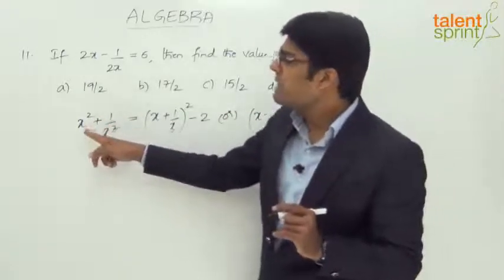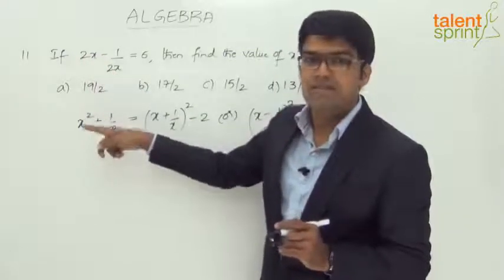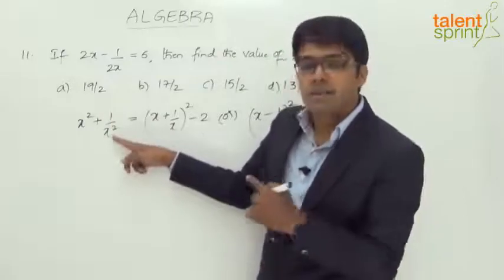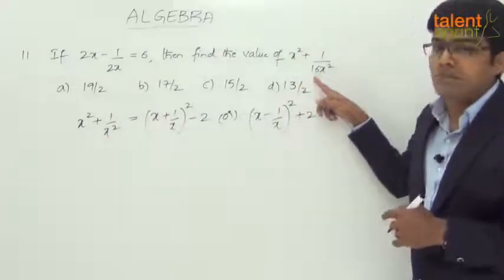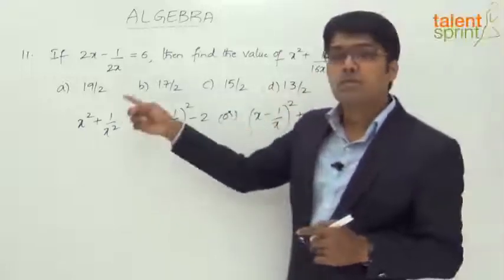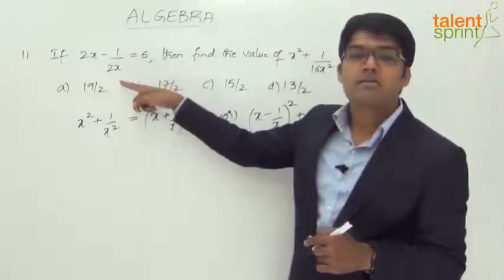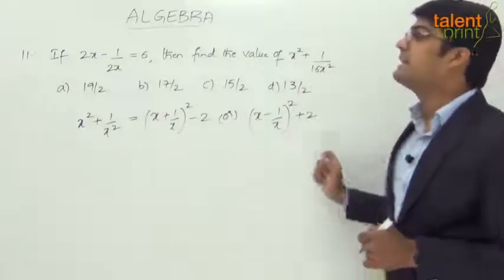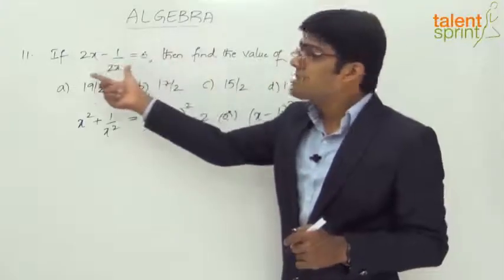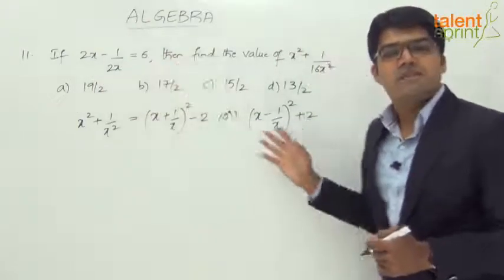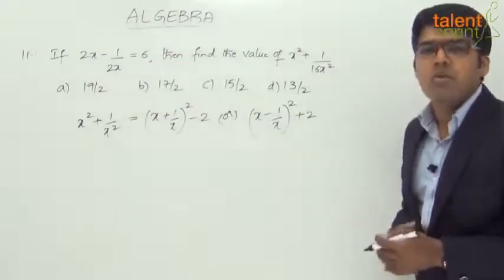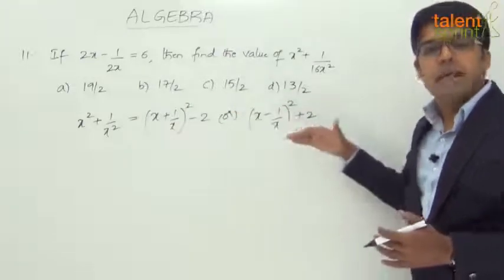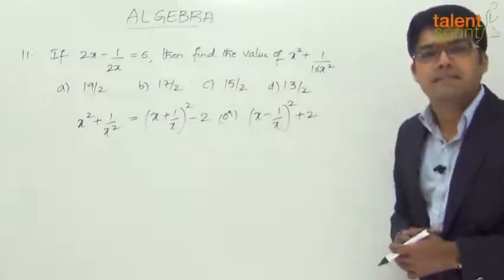Now if you observe, what will be x squared? It will be 2x squared, which is nothing but 4x squared plus 1 by 2x squared, that is 1 by 4x squared. But what is required here is not the same. What do we get here? 4x squared plus 1 by 4x squared. But the requirement is x squared plus 1 by 16x squared. So directly taking it as 2x minus 1 by 2x whole square plus 2 will not give us the required answer. We will have to go in a regular method. Instead of directly using the identity, we have to use the actual expansion and see what the answer is.